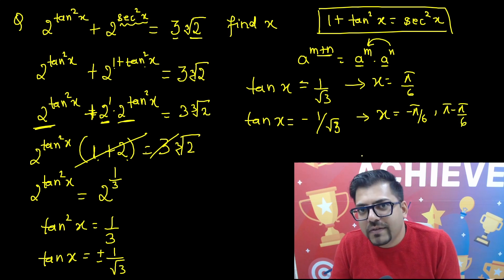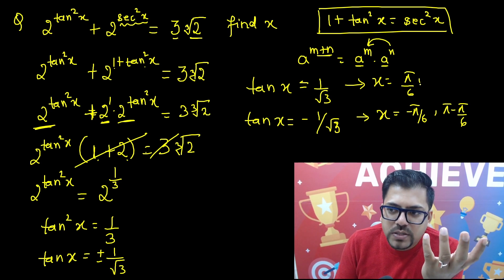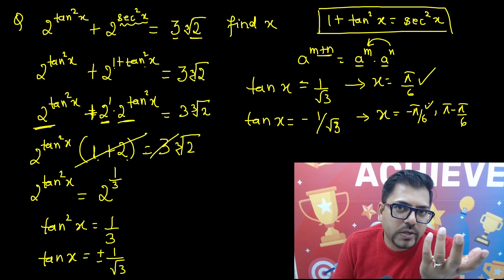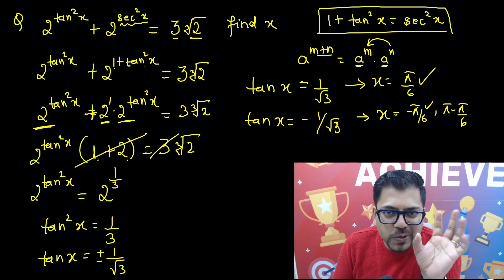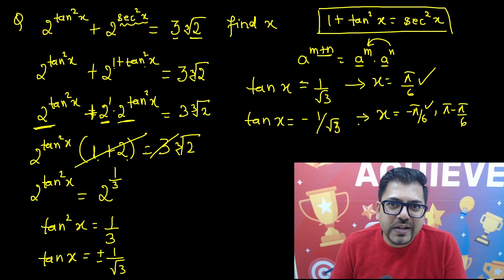It depends on what range of x is given, that in which range you have to tell the answer. If there is no range, you can simply tell plus 30 degree and minus 30 degree. And that's the answer. So did you enjoy? Quickly tell me in the comment box. Did you like it or not? And let's move on to see the next question.